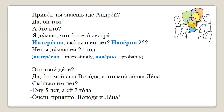Это твои дети? Да, это мой сын Володя, а это моя дочка Лена. Сколько им лет? Ему пять лет, а ей два года. Очень приятно, Володя и Лена. Are these your children? Yes, this is my son Volodya and this is my daughter Lena. How old are they? He is five years old and she is two years old. Nice to meet you, Volodya and Lena.